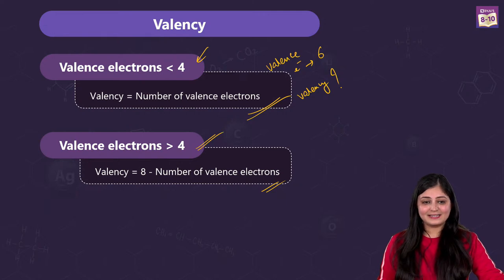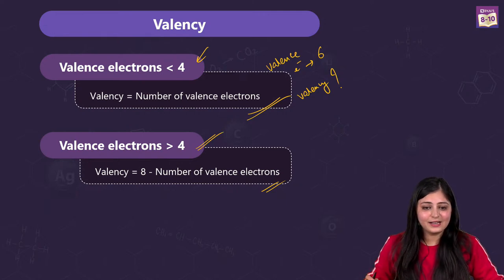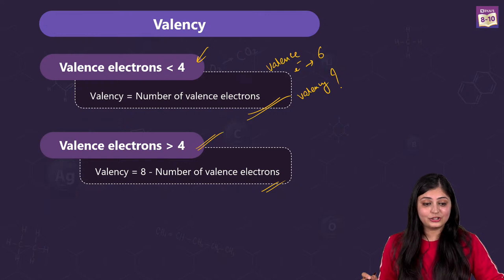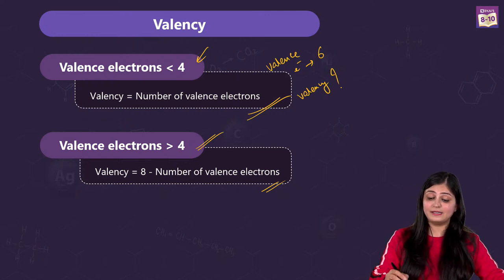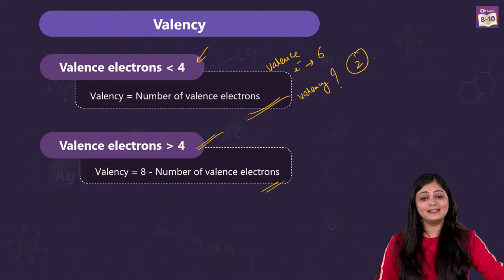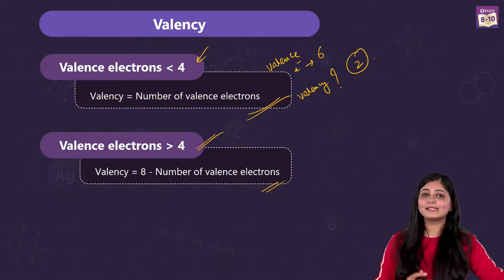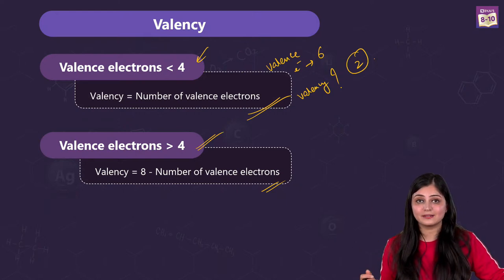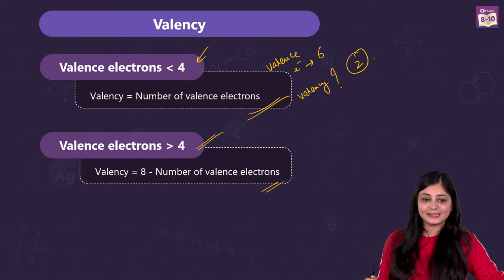Fida, Ayush, Nibha, Laksh, Shiksha, Prakar — everybody is saying it is two, and you are absolutely right. Why? Because it's easier to gain two electrons rather than losing six, isn't it.